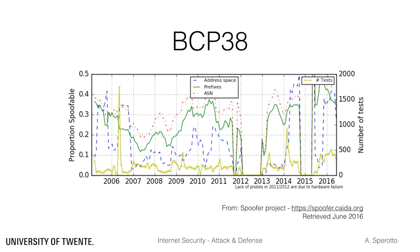Unfortunately, there is still a significant portion of networks on the open internet that do not implement BCP38. The Spoofer project, now maintained by CAIDA, was originally set up with the goal of measuring the portion of networks that allow spoofing. The project currently reports that roughly 20% of the address space, 30% of the prefixes, and 40% of the autonomous systems are spoofable. This percentage is still too high to have a positive impact on DDoS attacks, as we can see from the number and intensity of some of today's attacks.